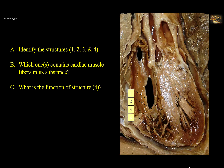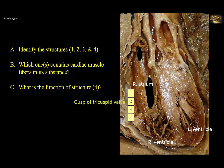This is a longitudinal section of the heart showing the right atrium with its thin wall, right ventricle with a thicker wall, and the left ventricle, which is the thickest of the four chambers of the heart. The opening between the right atrium and right ventricle is called the right atrioventricular orifice, and it is guarded by the tricuspid valve. One of its cusps is shown here and indicated by number 2.